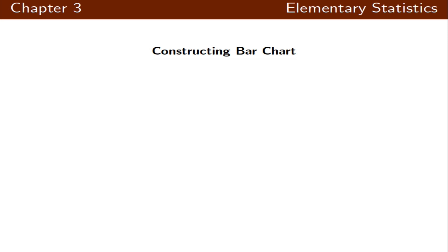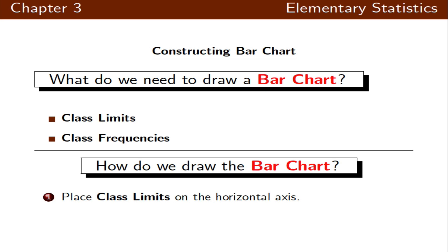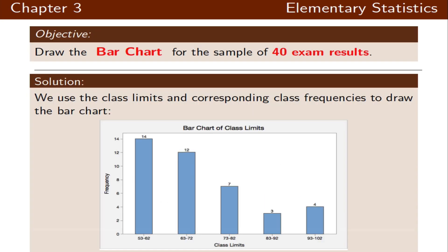Let's make our first graph, the bar chart. For the bar chart we need class limits and class frequencies. We place the class limits on the horizontal axis and use the class frequencies for the height of each bar. Notice that when we do bar chart there is a gap between different bars.